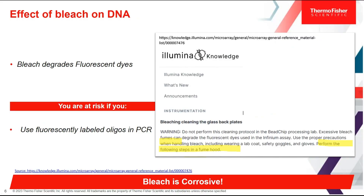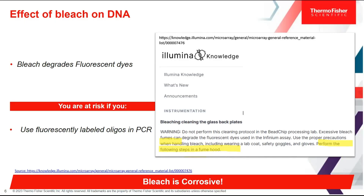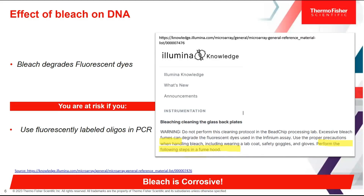The fourth effect concerns bleach and fluorescent dyes. In experiments such as PCR, we use primers and dyes, and bleach fumes have been shown to impact and degrade the fluorescent dyes used in HID multiplex PCR kits. This can lead to a partial profile or no profile at all. It is the fumes of the bleach that cause this impact, and an excerpt from one of the dye kit manufacturers shown here explicitly says to avoid using bleach when preparing for your PCR.